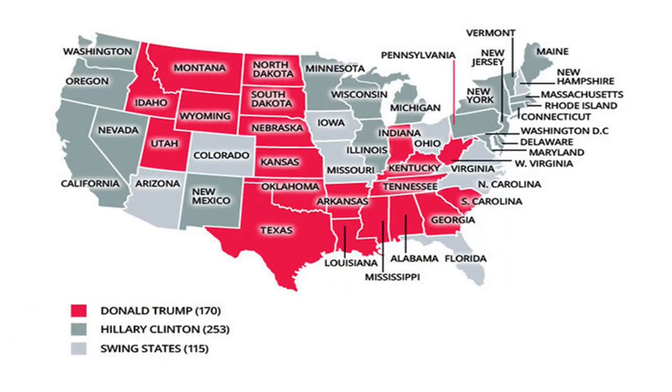There are seven swing states, located mostly in the middle to eastern part of the United States. They include Pennsylvania, Wisconsin, and the Sunbelt states of Georgia and North Carolina. These are called swing states or toss-ups because they have historically alternated between Republican and Democratic victories. The most important swing state in this election is Pennsylvania — whoever wins there has the best chance of winning overall.